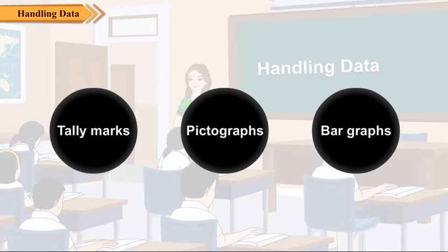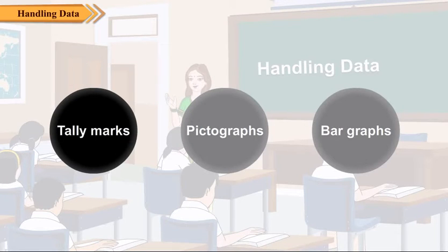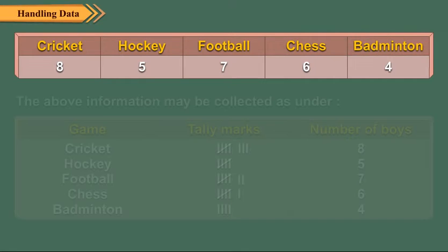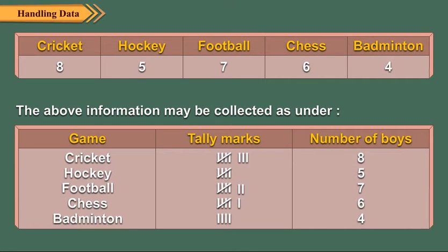Let us see how we collect data using tally marks. Suppose we have a row of 30 boys who like different games: cricket, hockey, football, chess, and badminton. We go on asking each boy his choice of games and recording the collected information. In such a case, we prepare a table containing the available choices. Then for each boy, we mark a vertical line called a tally mark against his particular choice.